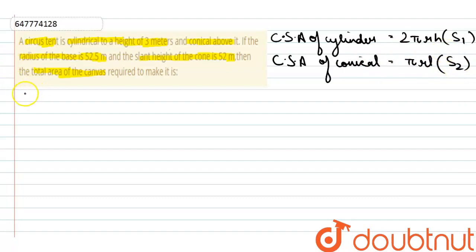Now, given our height is equal to 3 meter, radius is 52.5 meter and the slant height L is equal to 52 meter.